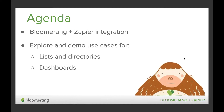Then we're going to dive right in to explore and demonstrate how you can use the Bloomerang Zapier app with Google Sheets to create real-time lists, directories, and activity dashboards. We have use cases throughout the presentation to showcase how you can create these automations at your organization so that you can support your fundraising efforts and improve accessibility and visibility to key metrics. Feel free to submit any questions during the presentation. We've got a couple built-in breaks and then more time for questions at the end.